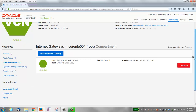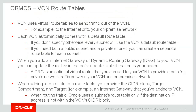Your cloud network uses virtual route tables to send traffic out of the virtual cloud network — for example to the internet or to your on-premises network. Each virtual cloud network automatically comes with a default route table. If you don't specify otherwise, every subnet will use the VCN's default route table. If you do need a public subnet and a private subnet, you need to create separate route tables for each. When you add an internet gateway or a Dynamic Routing Gateway (DRG) to your VCN, you can update the route tables. A DRG is an optional virtual router that you can add to your VCN to provide a path for private network traffic between your VCN and your on-premises network.